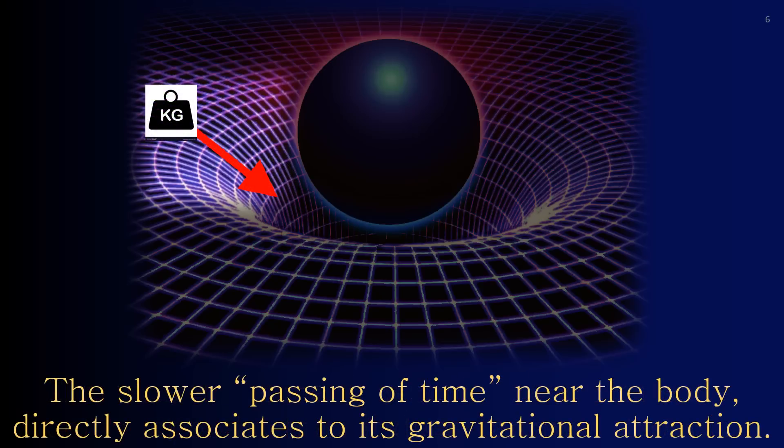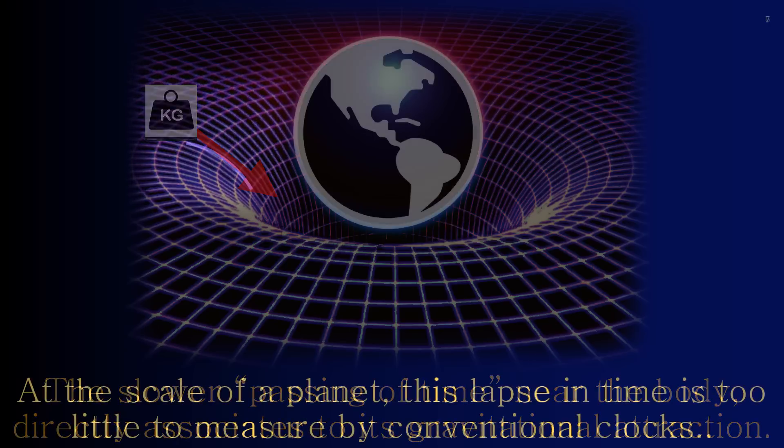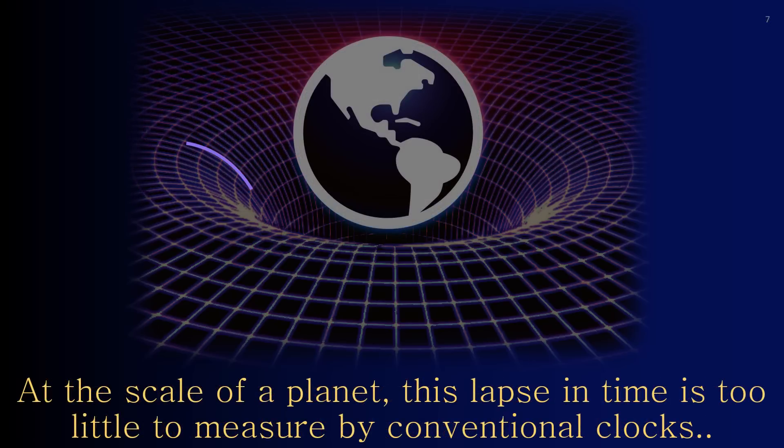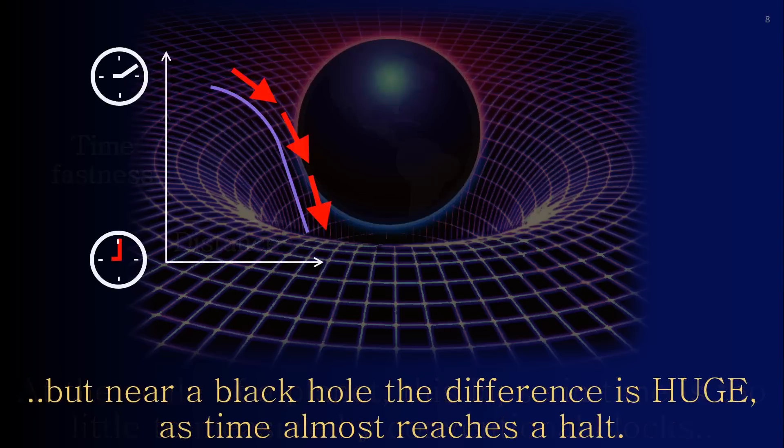The slower passing of time near the body directly associates to its gravitational attraction. At the scale of a planet, this lapse in time is too little to measure by conventional clocks. But near a black hole the difference is huge, as time almost reaches a halt.